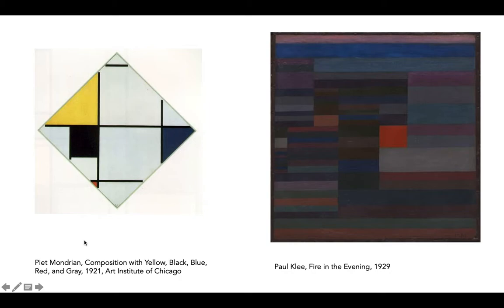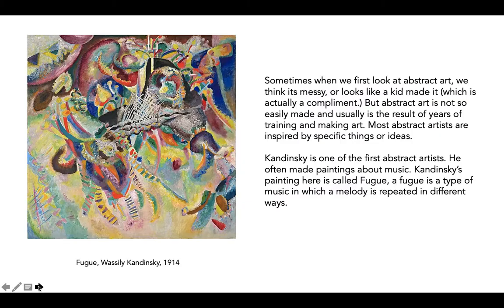Piet Mondrian was an artist who used black and white, vertical and horizontal lines, and squares with the primary colors yellow, blue, and red to express ideas of harmony and even places. Paul Klee uses strips and blocks of color to make abstract, simplified versions of landscapes. This painting is called Fire in the Evening, and I imagine this is a campfire when you see it from far away.